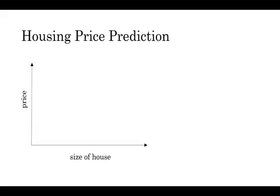Let's start with a housing price prediction example. Let's say you have a data set with six houses, so you know the size of the houses in square feet or square meters, and you know the price of the house and you want to fit a function to predict the price of the house as a function of the size. So if you're familiar with linear regression, you might say, well, let's fit a straight line to this data. Maybe you get a straight line like that.